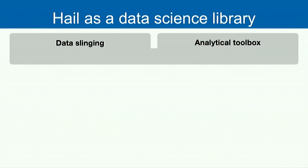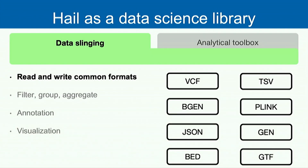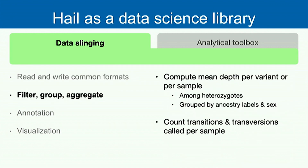When we think about Hail, there are two major areas to cover before our first practical. First, how do you ingest your data, and what file formats can you read in? You can use VCF, TSV, BGEN, Plink files, JSON, GEN files, BED files, GTS — essentially any file format containing genetic data. You can then filter, group, and aggregate your data.